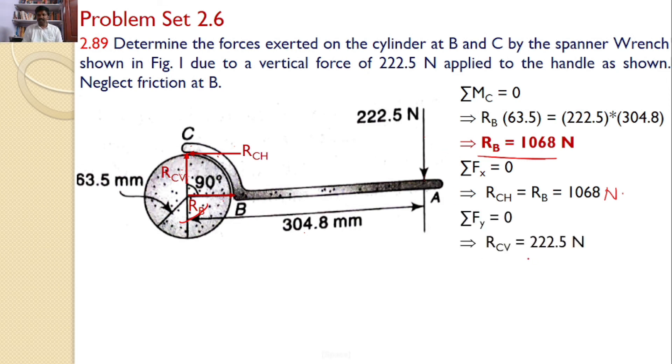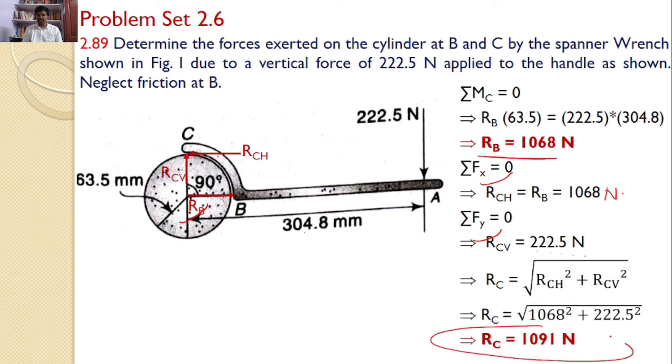I know the value of RCH and RCV. Hence, I can find the reaction at C by using the equation root of RCH square plus RCV square, which gives the value of RC, that is 1091 Newtons, the answers for the given problem.